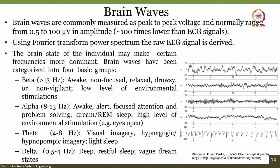Using the Fourier transform power spectrum, the raw EEG signals are derived and the brain state of an individual may make certain frequencies more dominant. Brain waves have been categorized into four basic groups, shown on the right side. Beta waves are greater than 13 Hz and they are obtained when a person is awake but non-focused, relaxed, drowsy, or non-vigilant — meaning a low level of environmental stimulation.